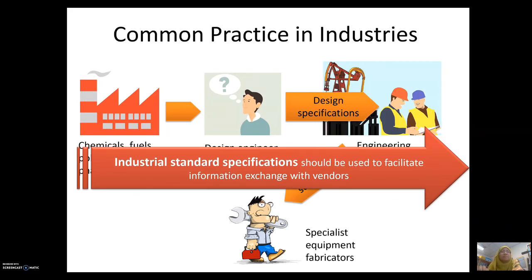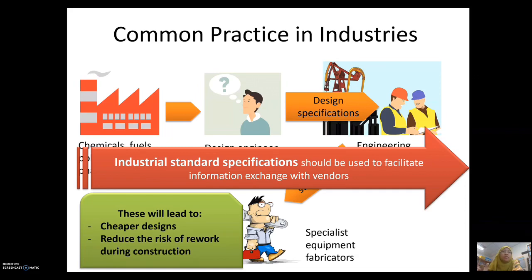By having standard specifications, it will facilitate information exchange with vendors. We need specifications because this will lead to cheaper designs — because most of the piping sizing is as per the standard. If the diameter is not following the standard, we need to customize the piping, meaning we need to fabricate from solid metal to get a special pipe diameter, which will greatly increase the cost.